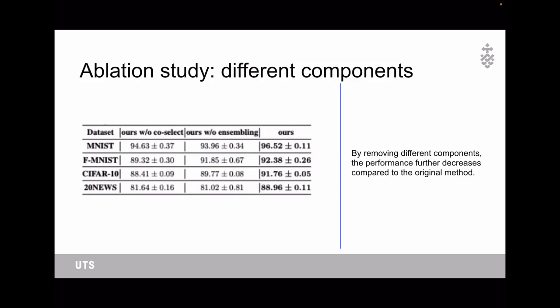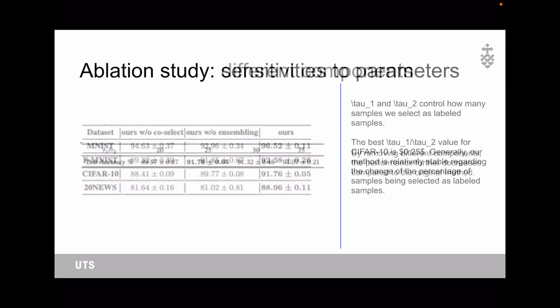We also study the effects of removing different components to provide insights into the effects of these components. To study the effects of co-select, we train a single network to select its own confident samples. The decrease in accuracy indicates co-select can select more accurate positive and negative samples by reducing the confirmation bias of a single network. To study the effects of ensemble predictions of two networks, we use the prediction from a single model. The performance further decreases compared to the original method, demonstrating the effectiveness of these two components.